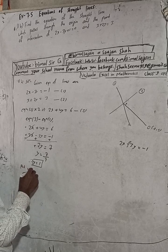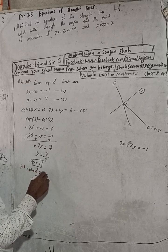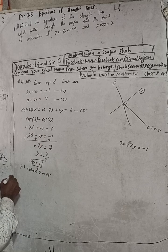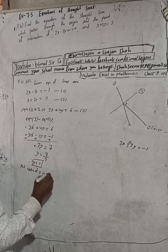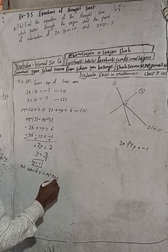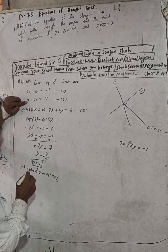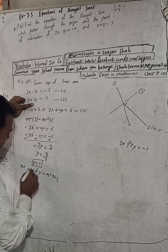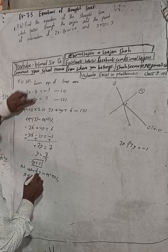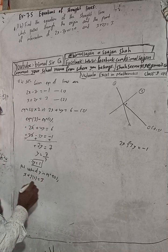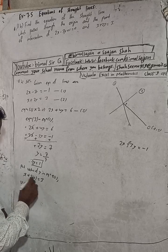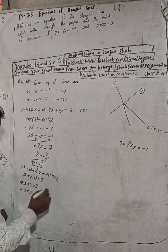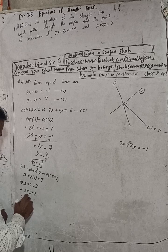Now put the value of y into equation 2. In equation 2: x + 2(1) = 3, which gives x + 2 = 3, so x = 3 - 2 = 1. Therefore x = 1.